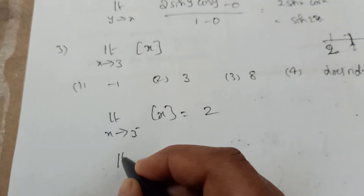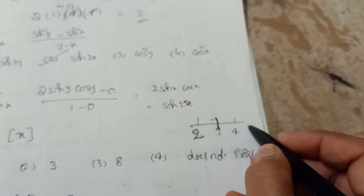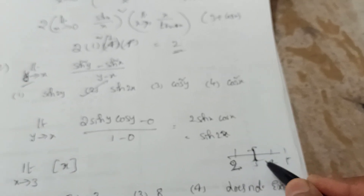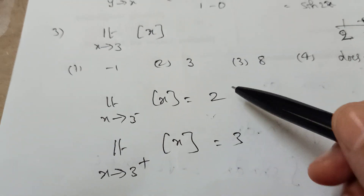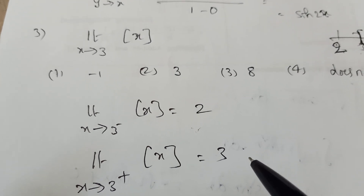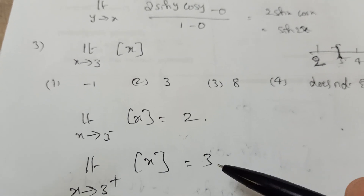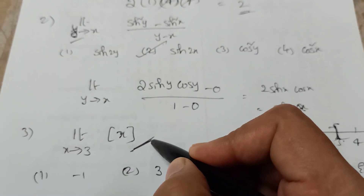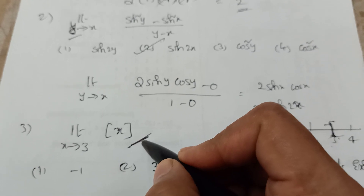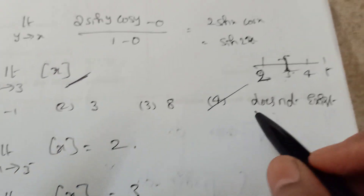For the right-hand limit, x tends to 3⁺, meaning values just greater than 3, so the greatest integer is 3. Left-hand limit = 2 and right-hand limit = 3, which are not equal. Therefore the limit does not exist. The answer is 'does not exist'.